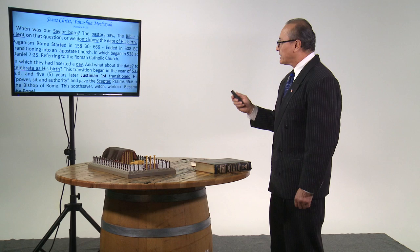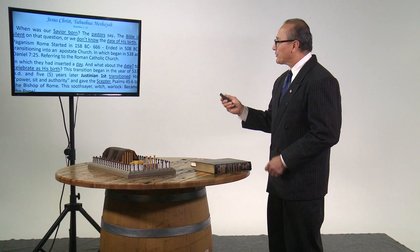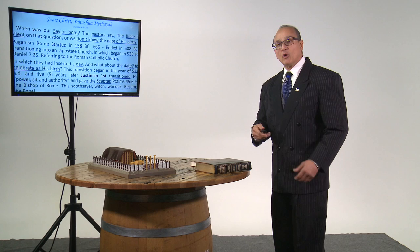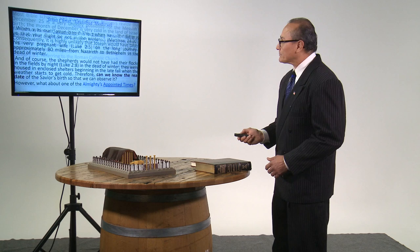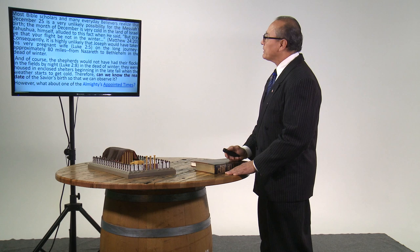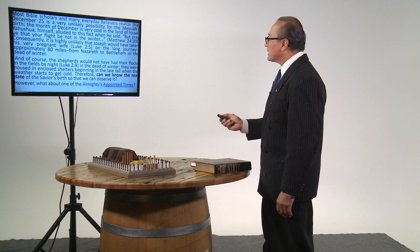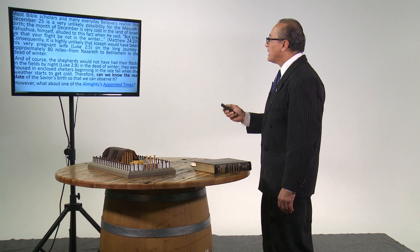What about the date? Because the Catholic Church is the one that inserted the date. This transition began in the year 533, five years later Justinian I, the last emperor of Rome, transitioned his power, seat, and authority, and gave the scepter to the bishop of Rome. The bishop of Rome at that time is a soothsayer, a witch, warlock, which became the Pope. Most Bible scholars realize that December 25th is a very unlikely possibility for the Messiah's birth. The month of December is very cold in the land of Israel.